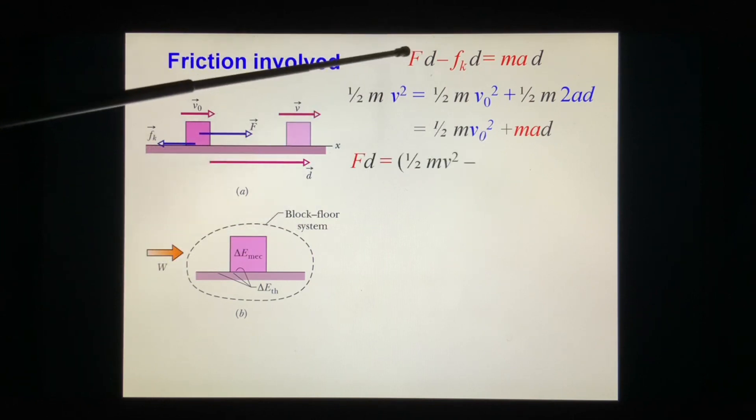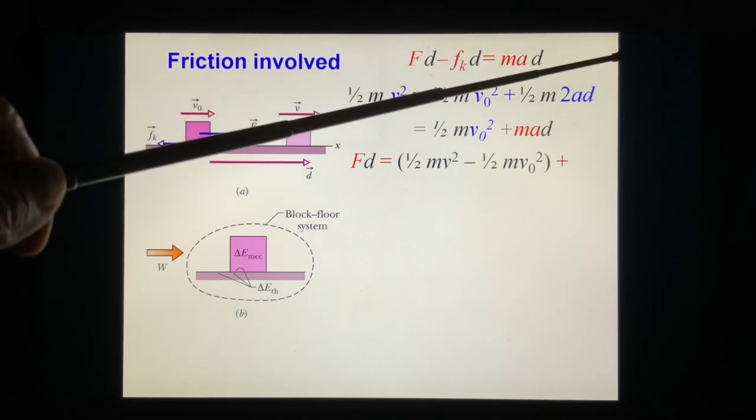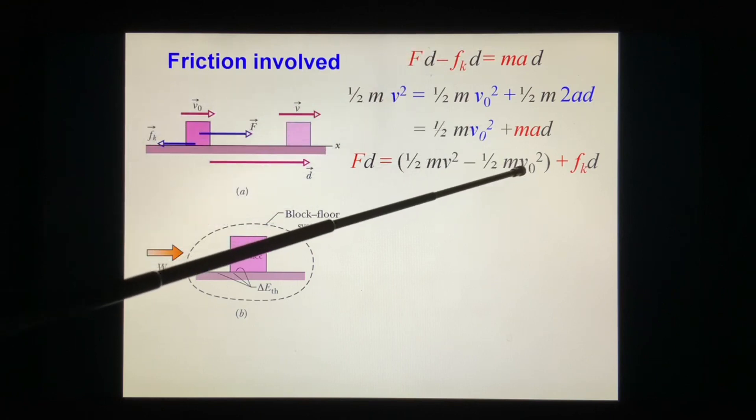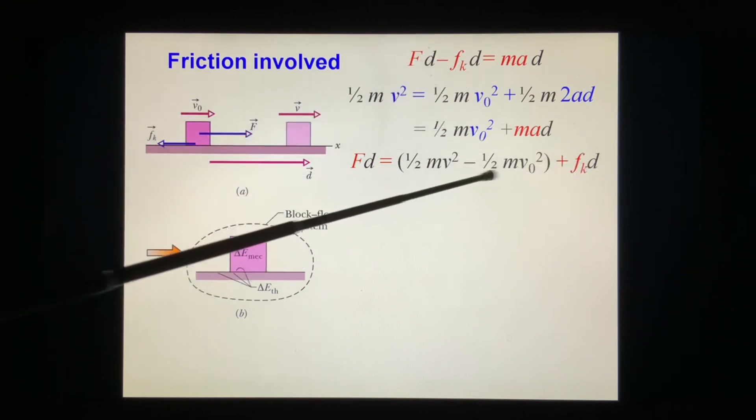We rewrite this formula. We move this one over. Mad is ½mv² - ½mv₀² + f_k·d. And we know this is ΔK of the block.